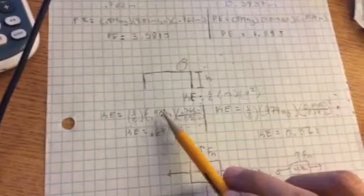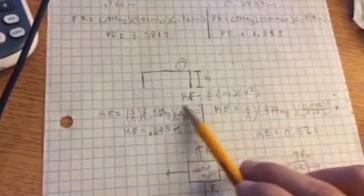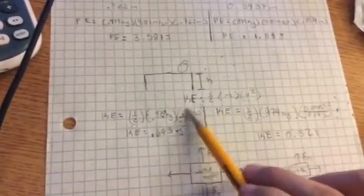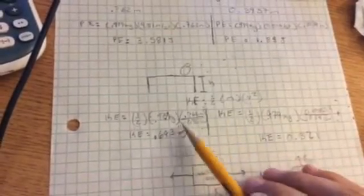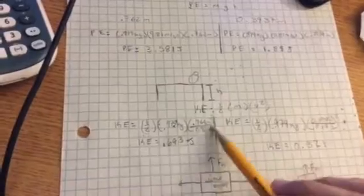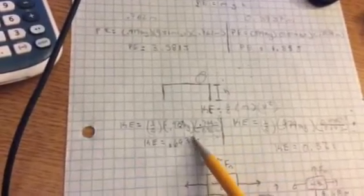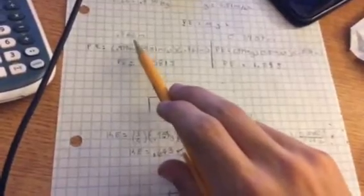I plugged in the mass and velocity. I found the velocity by using the huddle technique — initial position minus final position over time. I got a kinetic energy of 0.643 joules for the 0.762-meter height. For the second equation, I plugged in a different time and height, and I got 0.321 joules.